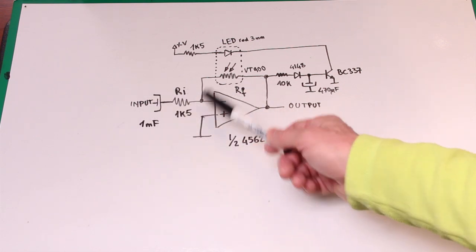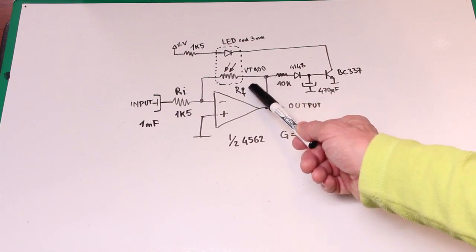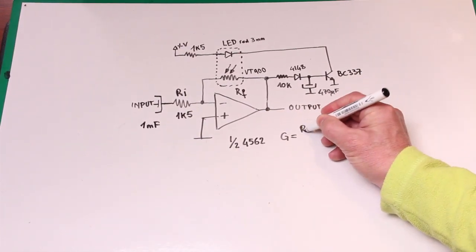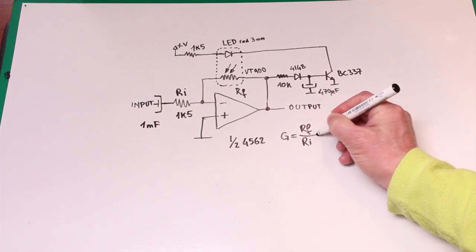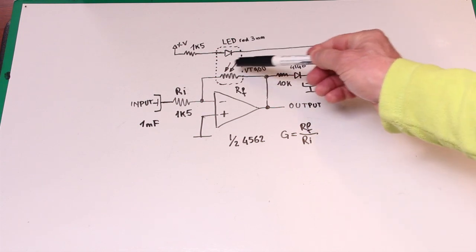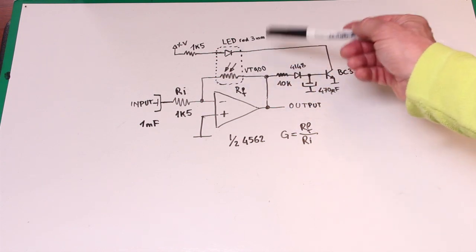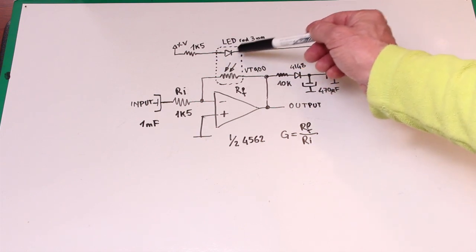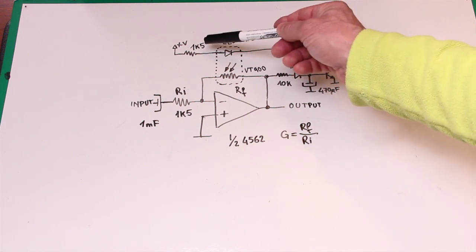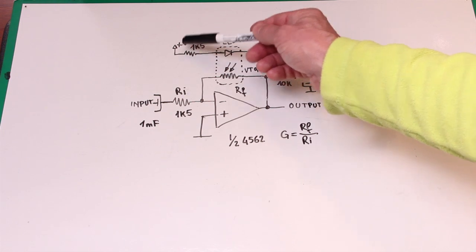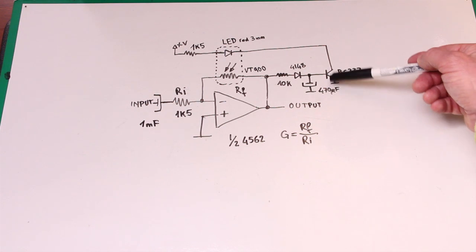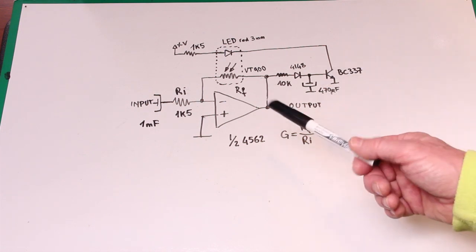The gain of the operation amplifier is given by the ratio between the feedback resistor over the input resistor. The feedback resistor is dependent by the photoresistor that is VT 900 that is lit through this LED which is a red LED 3 millimeter and this resistor limits the current that flows through the LEDs and through this transistor. So what's going on here?